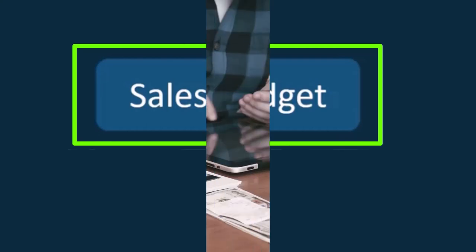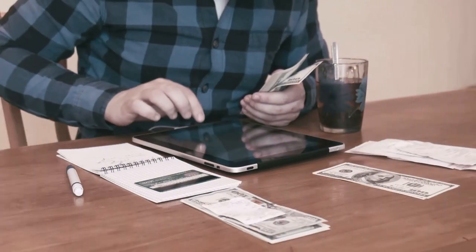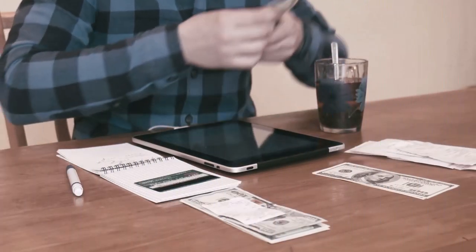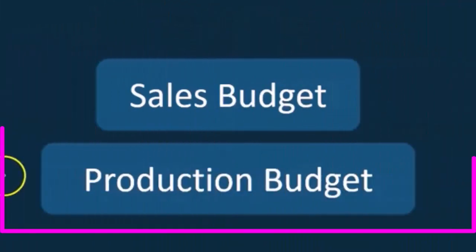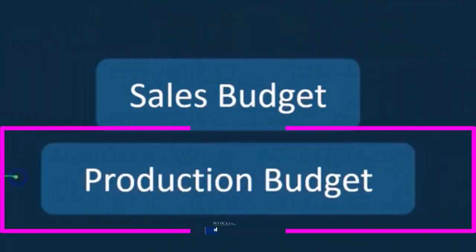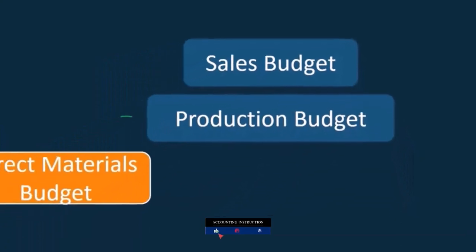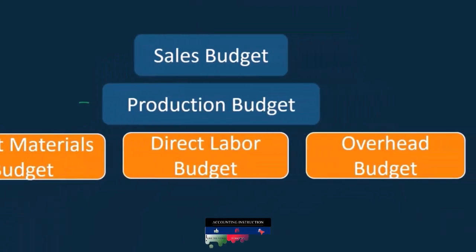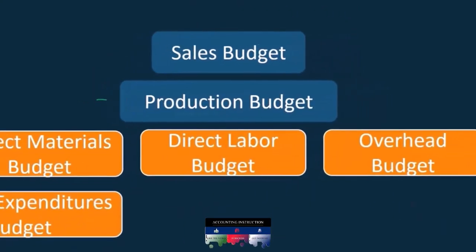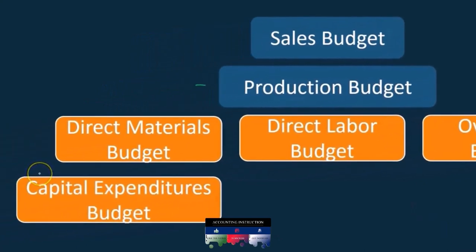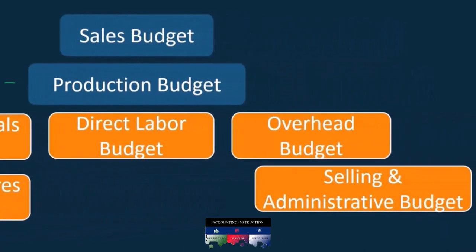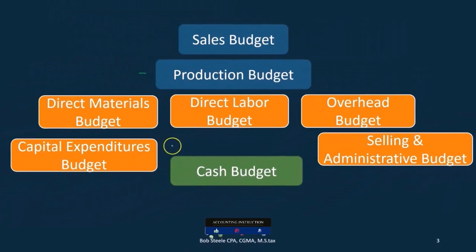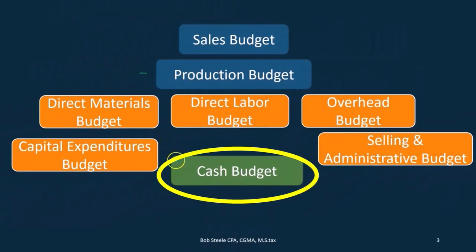Most of these budgets lead up until we get to the cash area, so we have to do the sales budget first. Once we have the sales budget we know what we're going to produce, then we do the production budget. Then we can do the direct materials budget, the direct labor budget, and the overhead budget, as well as the capital expenditure budget. That could be done at this time, along with the selling and administrative budget, and then we can take a look at the cash budget. So this is where we're at at this point — we're taking a look at the cash budget.